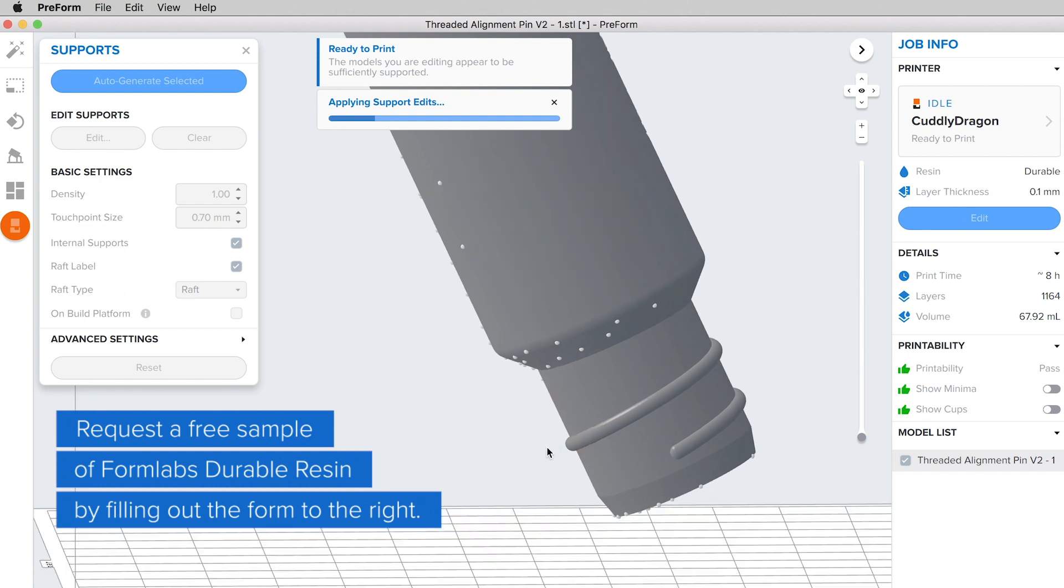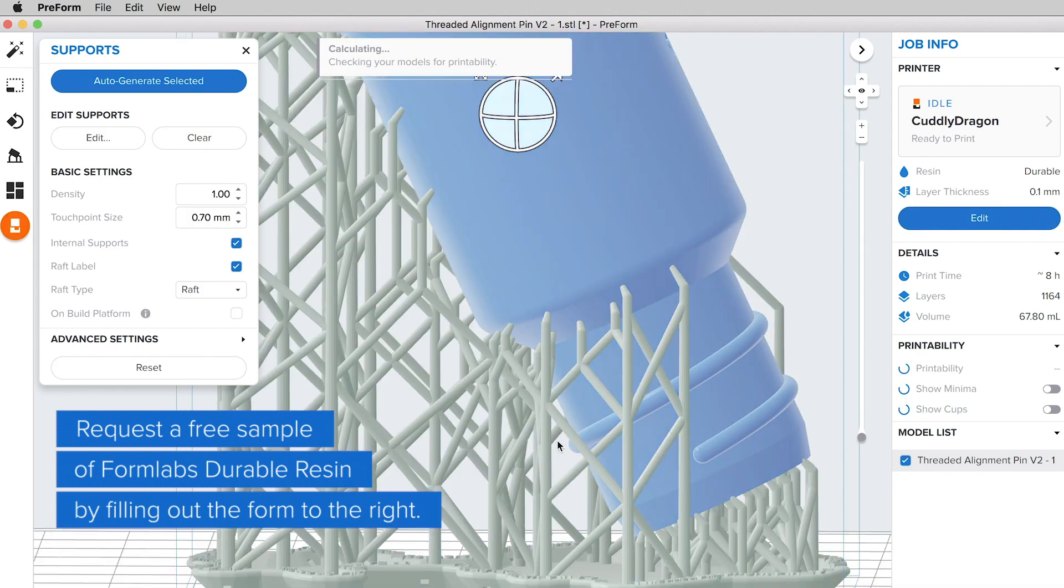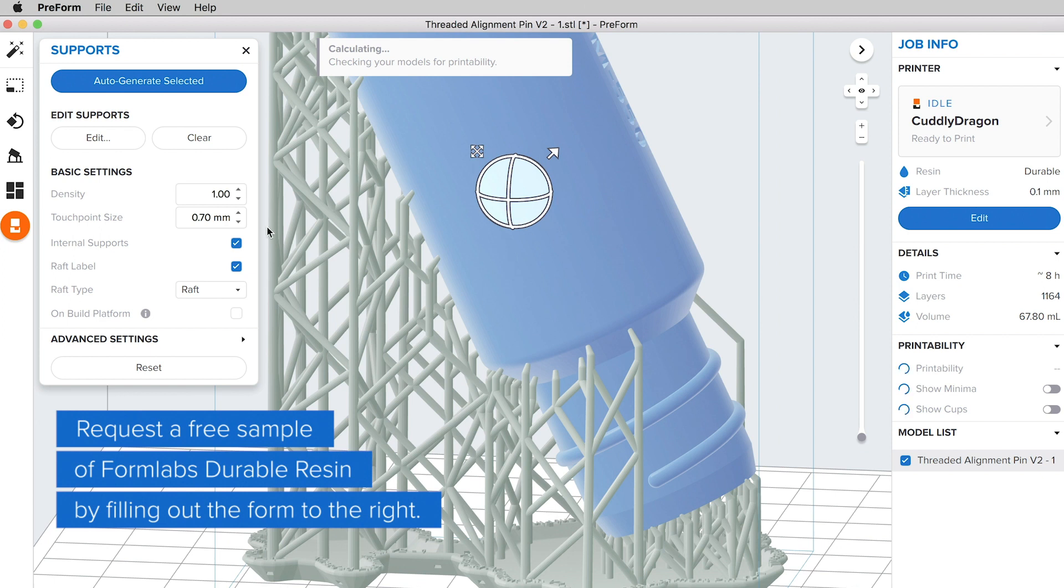If you're using threaded inserts or nut pockets, tough, gray, and rigid resins are popular choices due to their strength and stiffness.